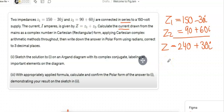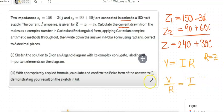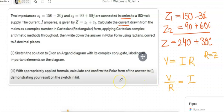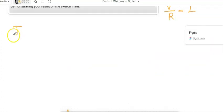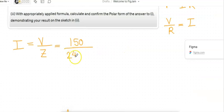Once you got this thing, it's asking you to find the current. To find the current, you need to know the formula: V equals IR. So I is V over R, and remember R is the same as the total impedance. V is 150, so I equals V over Z, which is 150 over 240 plus 30i.